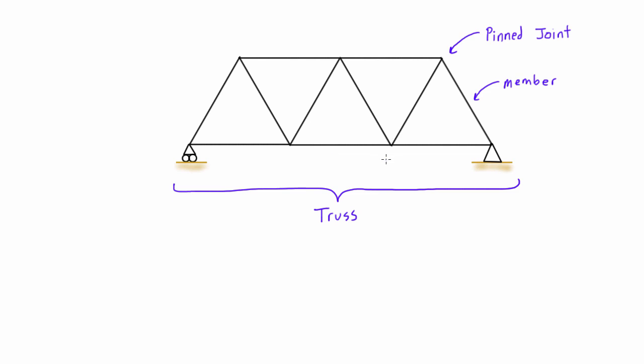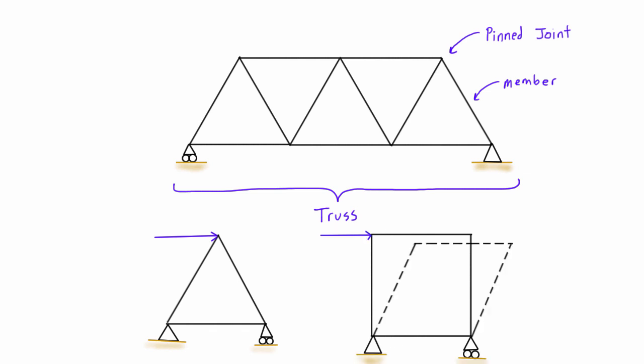Imagine this triangle down here - if we were to push it like this, it would stay stable. Versus if we had a box over here, if we were to push it, it would be unstable.